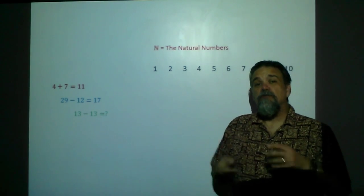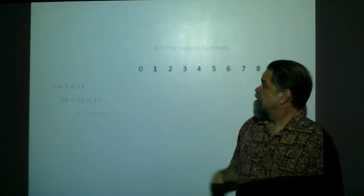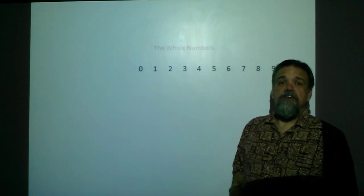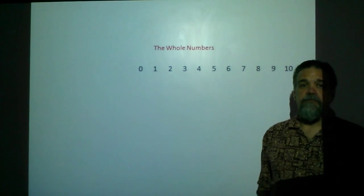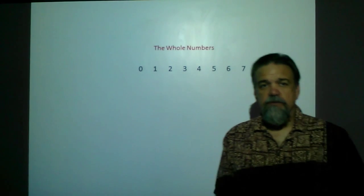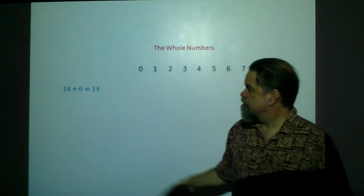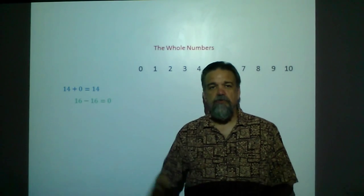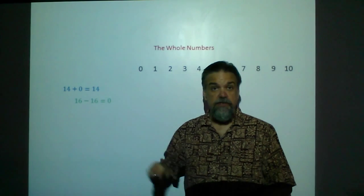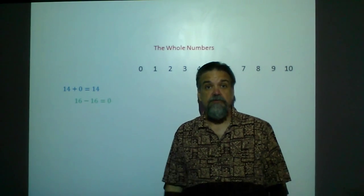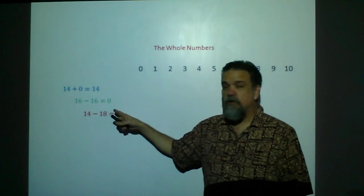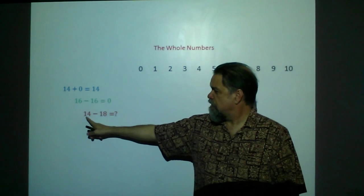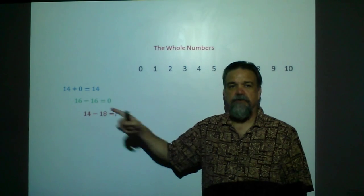So in order to do that, we have to expand our idea of number to include that one: zero. So now we have the set of whole numbers. With the whole numbers, we can do addition problems, we can do subtraction problems — this time using zero — but you can't do a subtraction problem where you take a smaller number minus a bigger number.